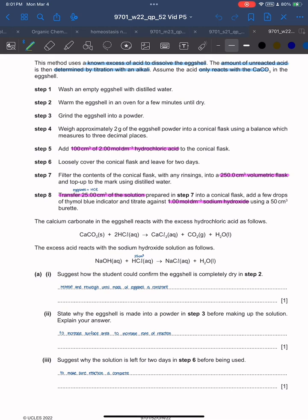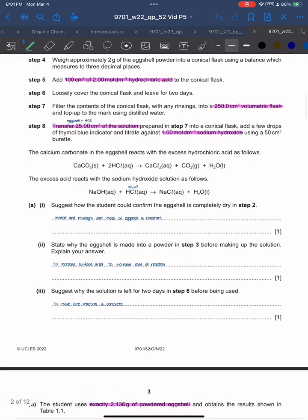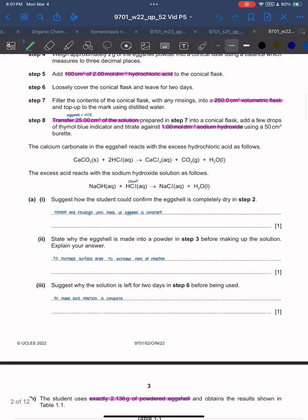State why the eggshell is made into a powder before making up the solution: to increase surface area to increase the rate of reaction. More surface area means a higher rate of reaction. Suggest why the solution is left for two days in step 6: to make sure the reaction is complete.